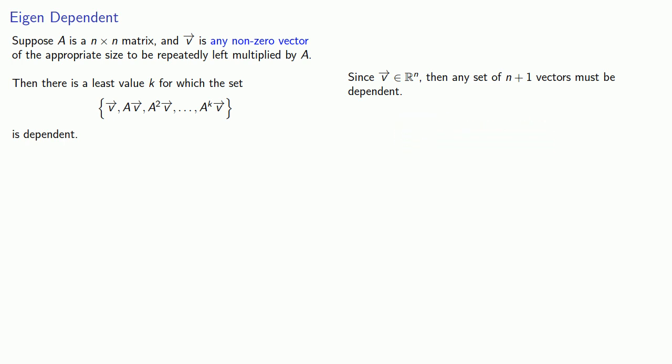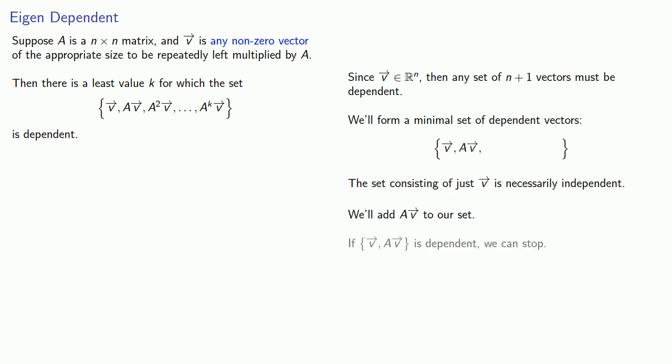Now, we'll form a minimal set of dependent vectors. And we can do that as follows. The set consisting of just the vector V is necessarily independent, so we'll add AV to our set. If the set V, AV is dependent, we can stop.